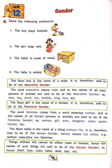Male: man. Female: woman. Boy is male, girl is female. Uncle is male, aunt is female. Son is male, daughter is female. Brother is male, sister is female. King is male, queen is female. Lion is male, lioness is female. The noun 'table' is the name of a thing without life. It is therefore said to be neuter gender. Neuter means neither masculine nor feminine — not either.